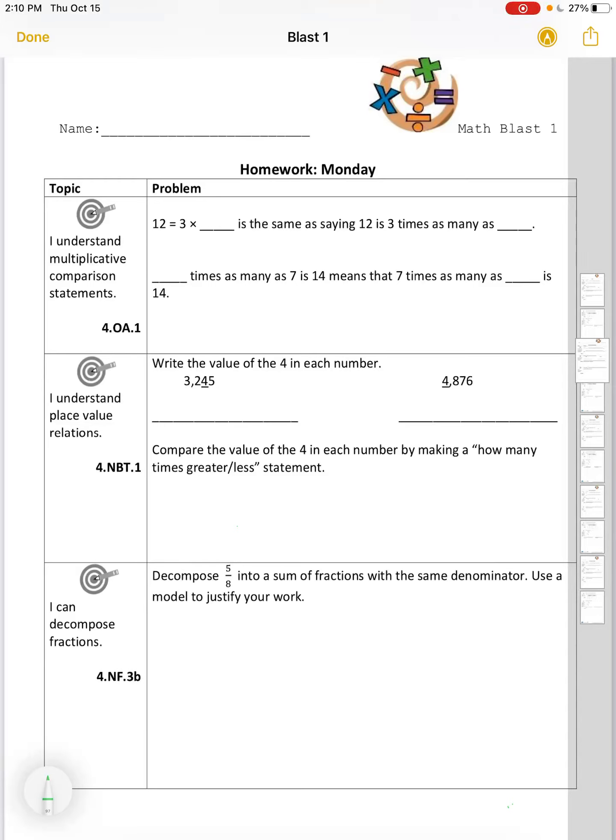Math Blast 1. I understand multiplicative comparison statements. 12 equals 3 times 4 is the same as saying 12 is 3 times as many as 4. Blank times as many as 7 is 14.